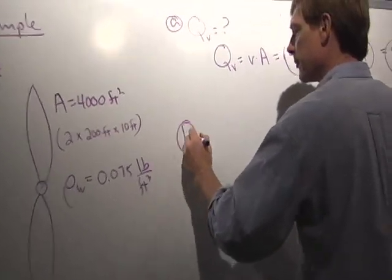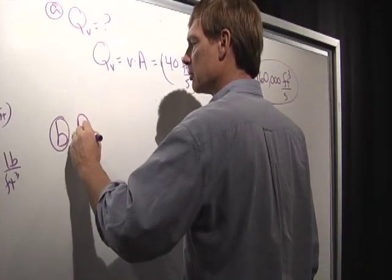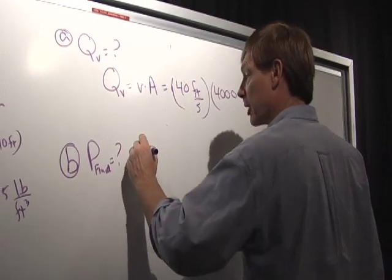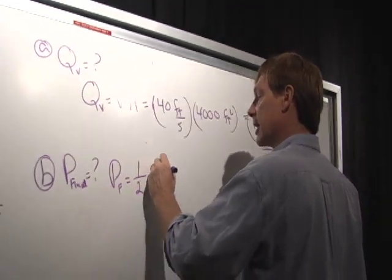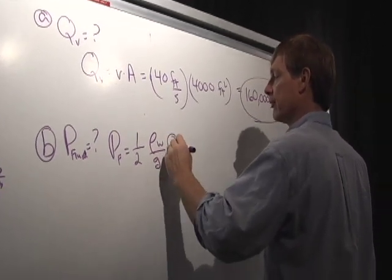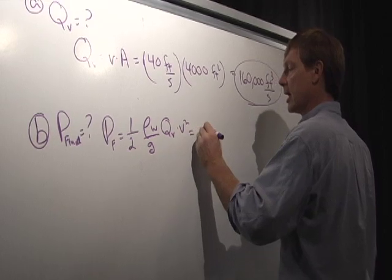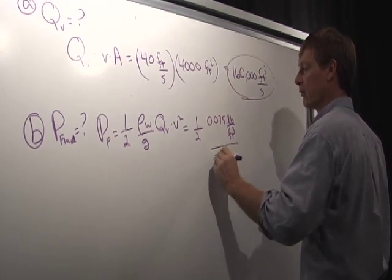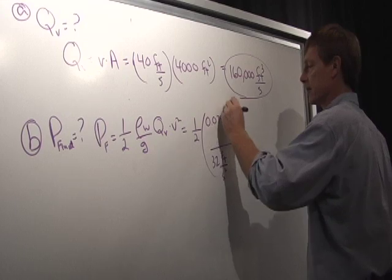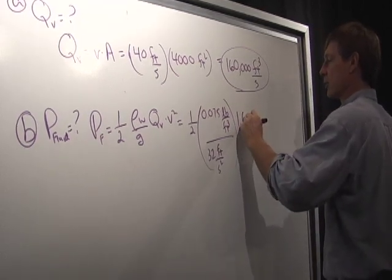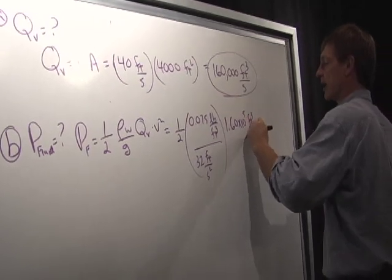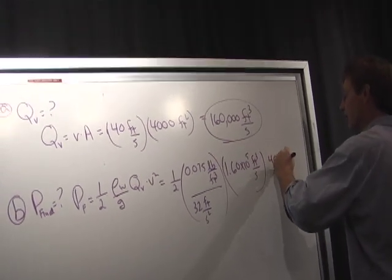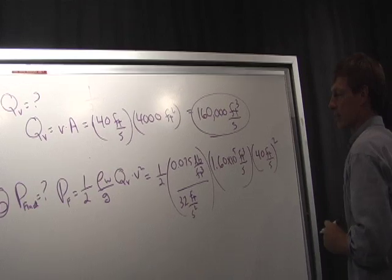So B, let's find the power, the fluid power. Now, I can use two different equations. I'll use the volume flow rate one. Fluid power is 1/2 times the weight density of air over gravity times volume flow rate times velocity squared. And that's 1/2, 0.075 pounds per cubic foot, over 32 feet per second squared times the volume flow rate of 160,000, 1.60 times 10 to the 5 cubic feet per second. Times the velocity squared, which is 40 feet per second, and that's got to be squared.